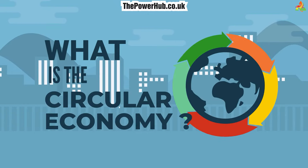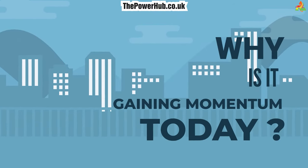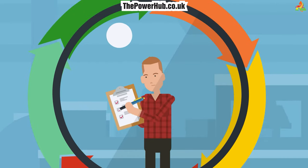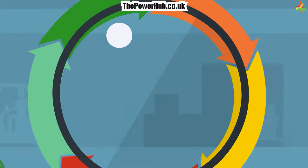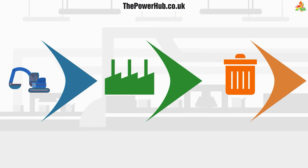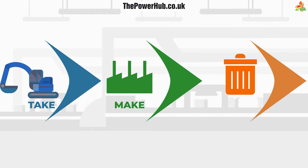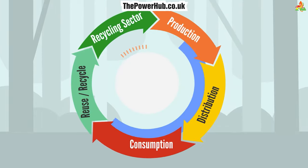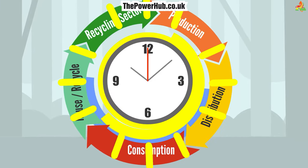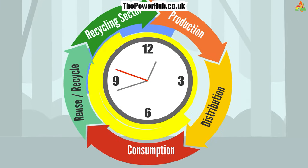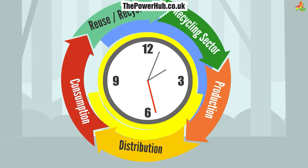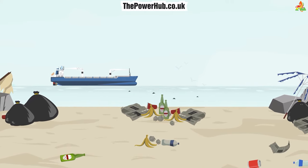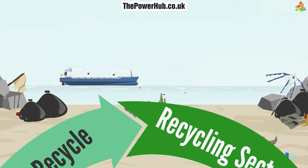What is a circular economy and why is it gaining momentum today? The circular economy is an economic system that aims to redefine our approach to production, consumption, and waste management. Unlike the traditional linear economy, which follows a take-make-dispose model, the circular economy seeks to keep resources in use for as long as possible and extract maximum value from them. It is a regenerative approach that minimizes waste, pollution, and the depletion of natural resources.